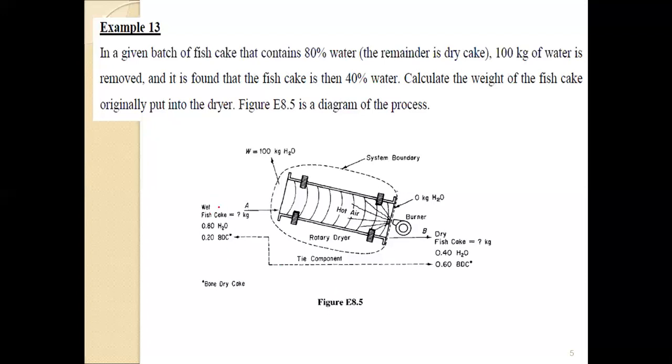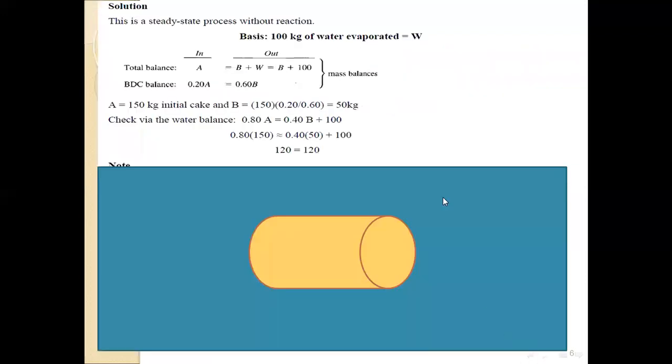As shown in the following figure, we have wet material or wet fish cake with high water content that will be dried by contacting with a stream of hot air to produce less water-contained cake. And this is the amount of water removed from the system.